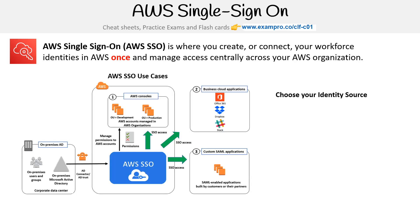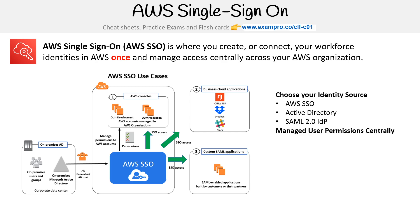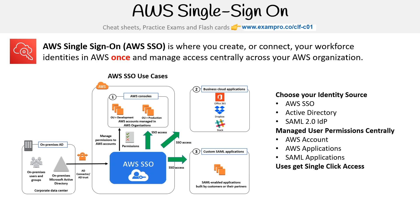The idea here is you're going to choose your identity source — whether it's AWS SSO itself, Active Directory, or SAML 2.0 IDP. You're going to manage user permissions centrally to AWS accounts, applications, and SAML applications, and you get single-click access to all these things.